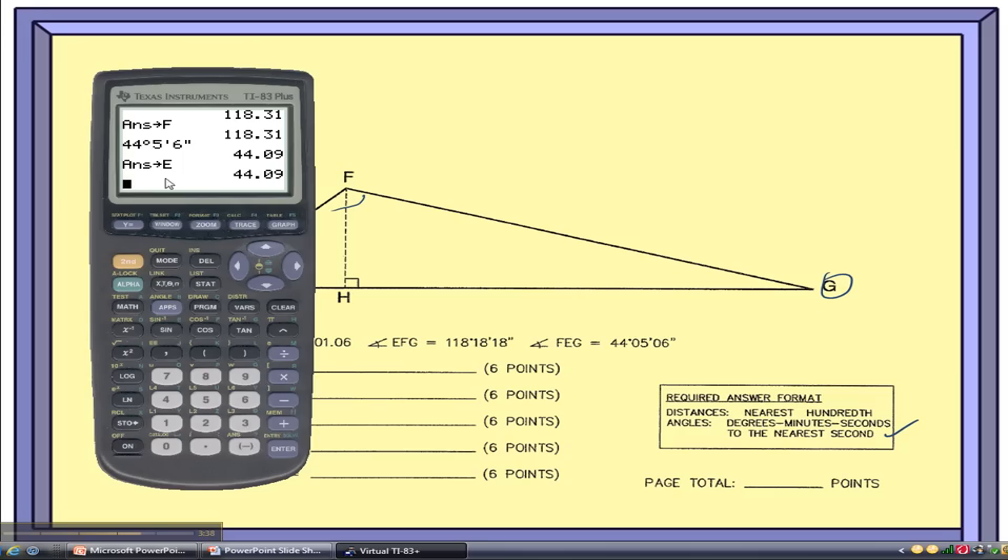So now we need to get G. So to get G, we're going to add up E and F in the calculator. So alpha E plus alpha F. And then subtract that total from 180. So 180 minus that answer. Not 80. One 80. Minus that answer. Second answer. And I have 17.61 degrees.